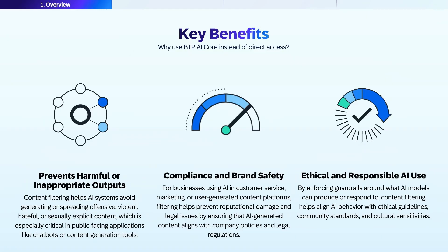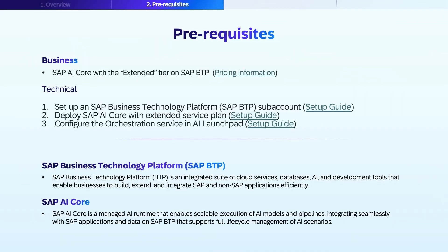Why should you use SAP BTP AI Core content filtering? There are three main benefits. First, model safeguard: you can easily prevent the model from spreading offensive, violent, or hateful content. Second, you ensure brand compliance and safety by tailoring the content filtration to your organization's values. Third, you have control over the model in order to provide an ethical and responsible AI service. These advantages make AI adoption more efficient and scalable.